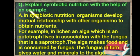The next question: explain symbiotic nutrition with the help of an example. In symbiotic nutrition, organisms develop a mutual relationship with other organisms to obtain nutrients. For example, in lichen, an alga, which is an autotroph, lives in association with a fungus, which is a saprotroph. The alga makes food which is consumed by the fungus, and the fungus in turn gives water and minerals to the alga, helping for its survival.